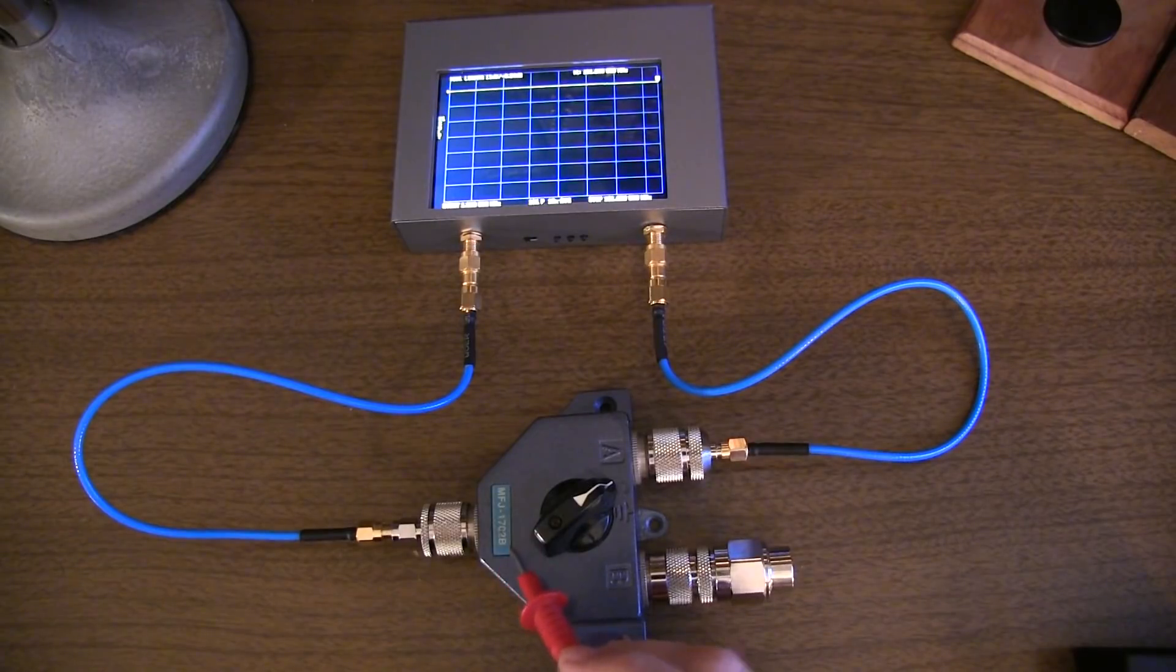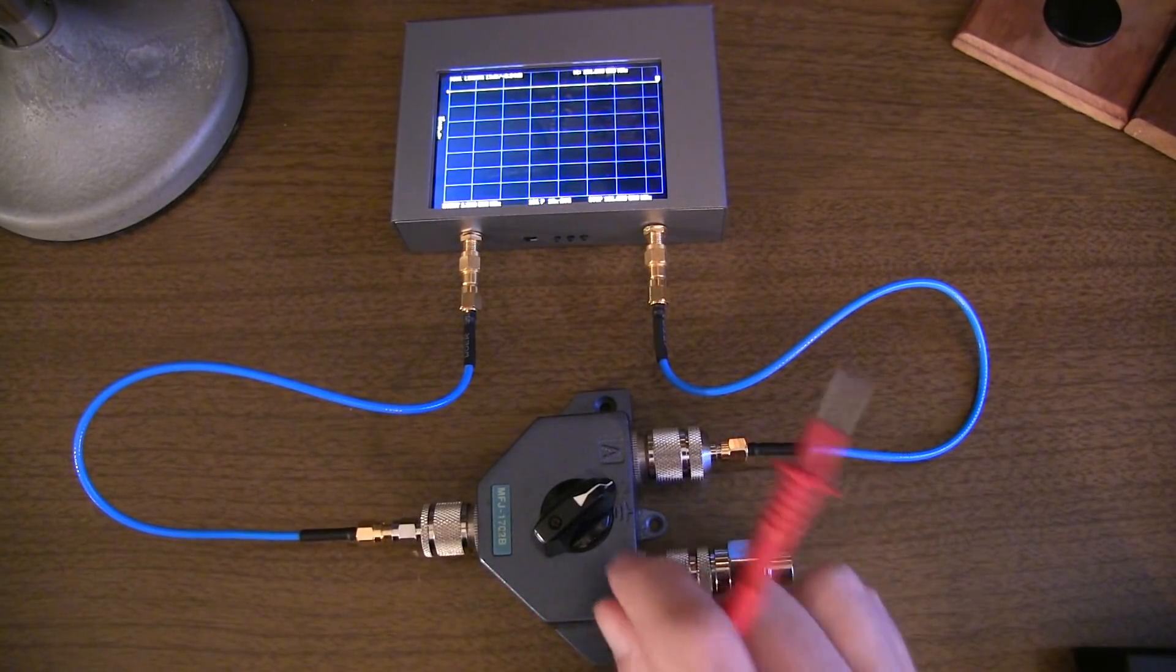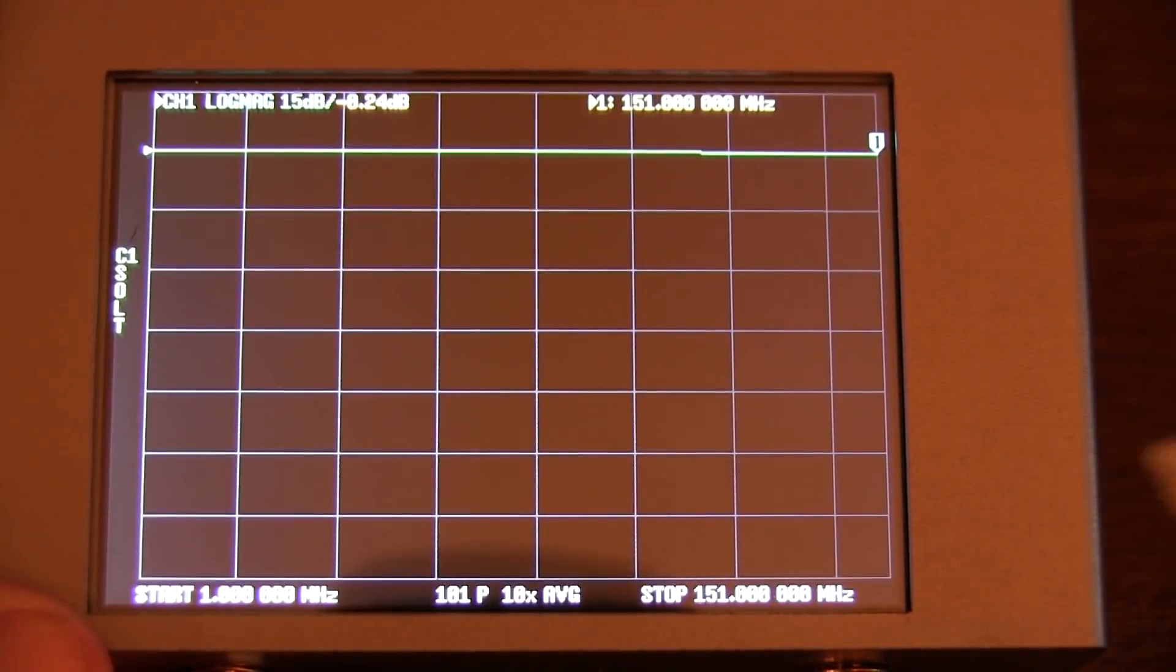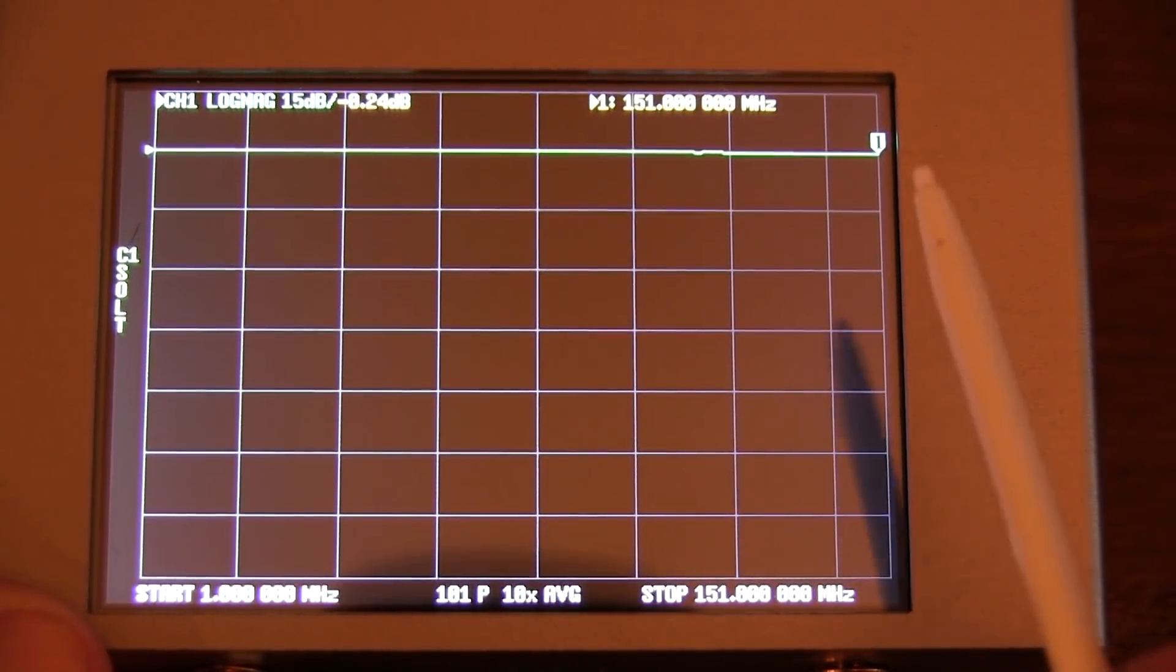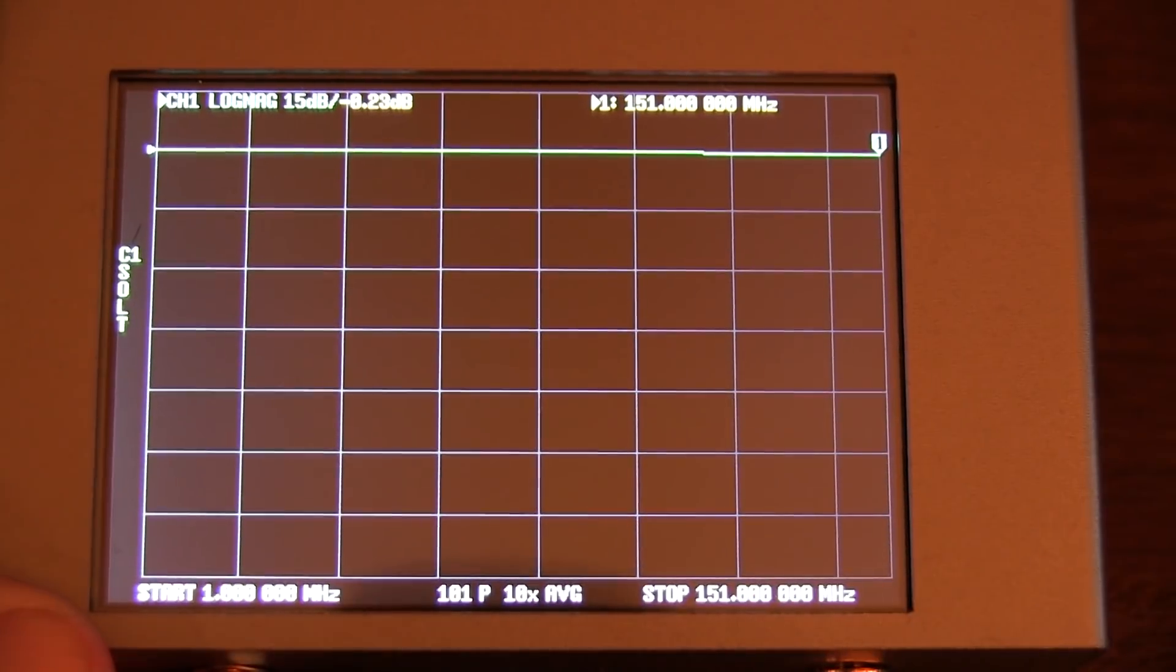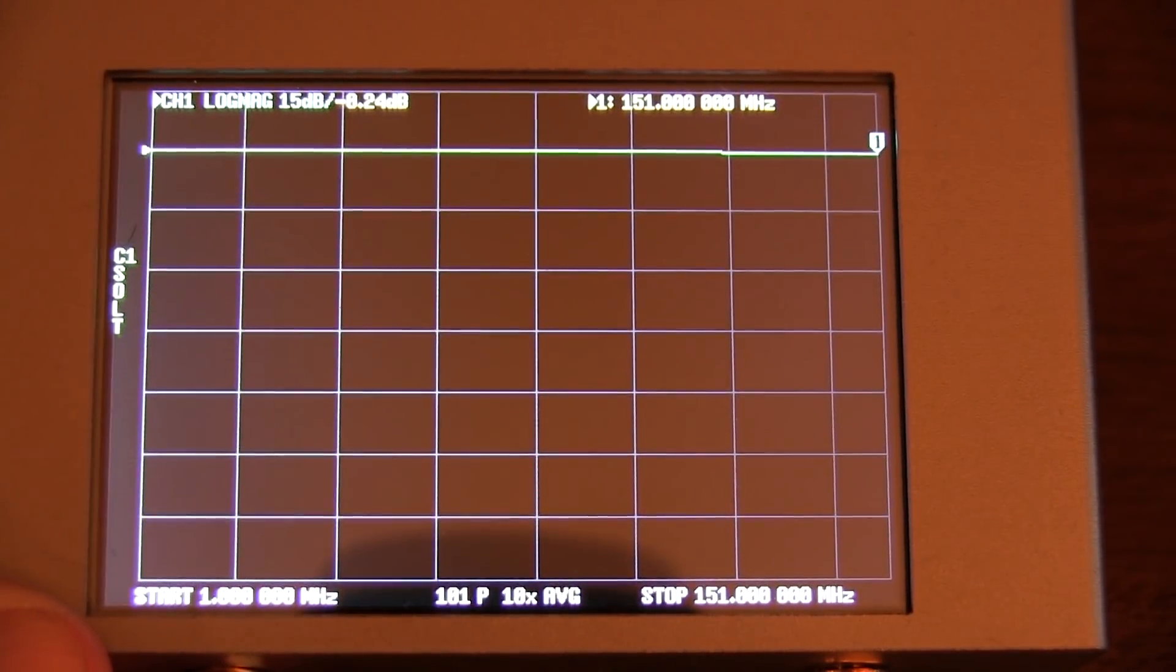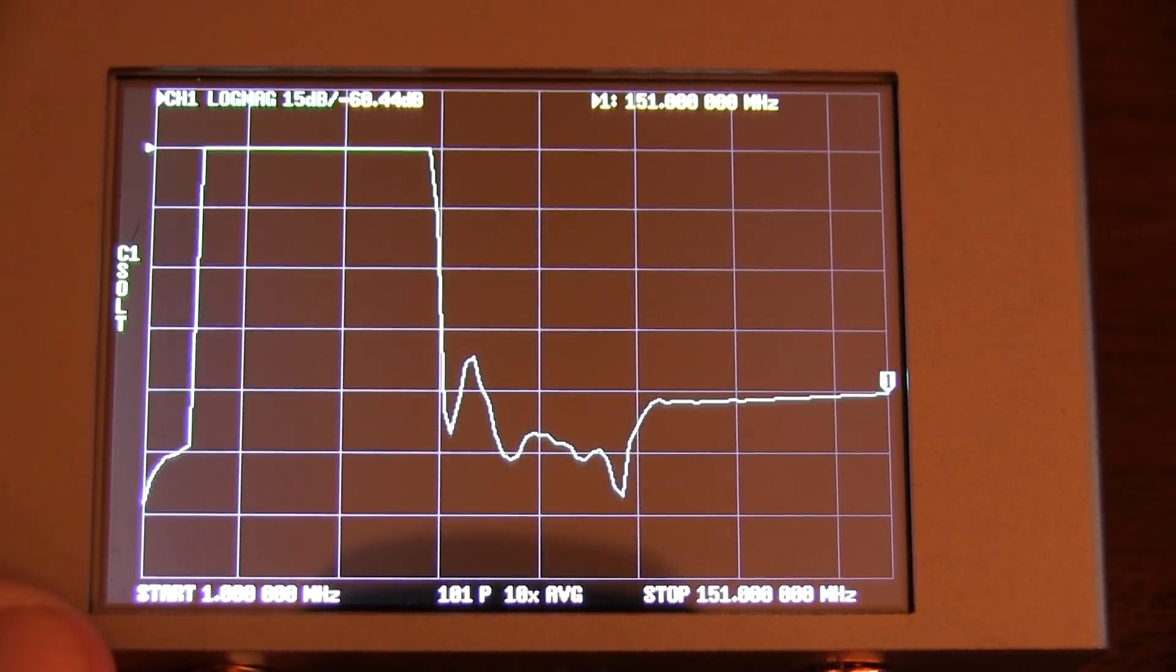Next, we'll take a look at this MFJ1702B relatively inexpensive two port coaxial switch. Again, the insertion loss at 150 megahertz, a little more than two tenths of a dB, so just a little bit worse than the alpha delta. Now let's switch it to the isolation position here, and let's see where we are.